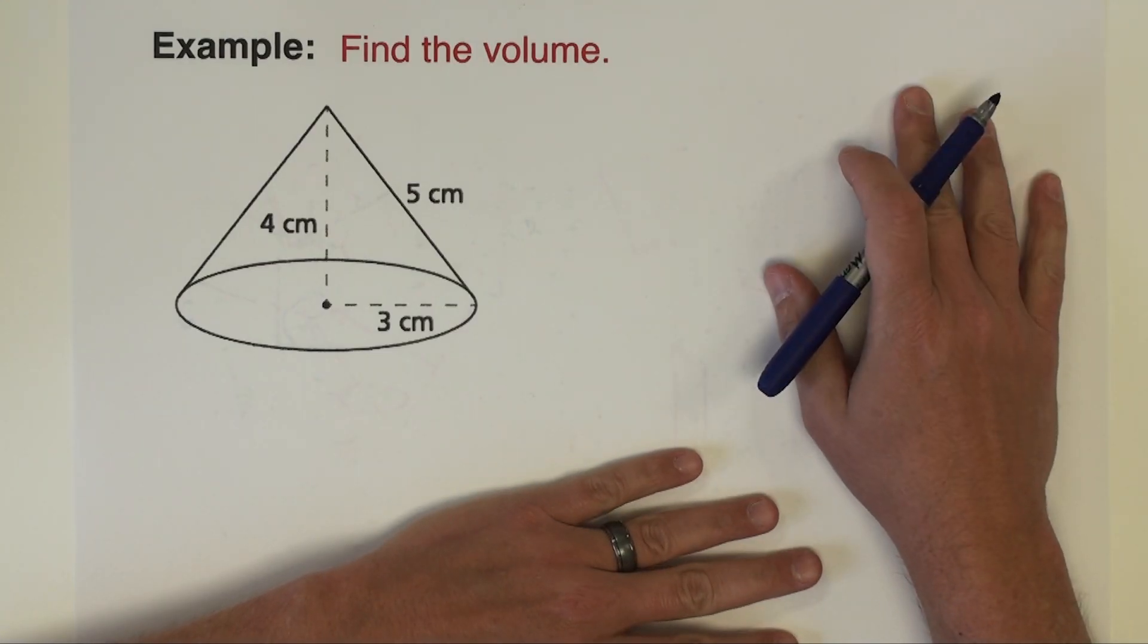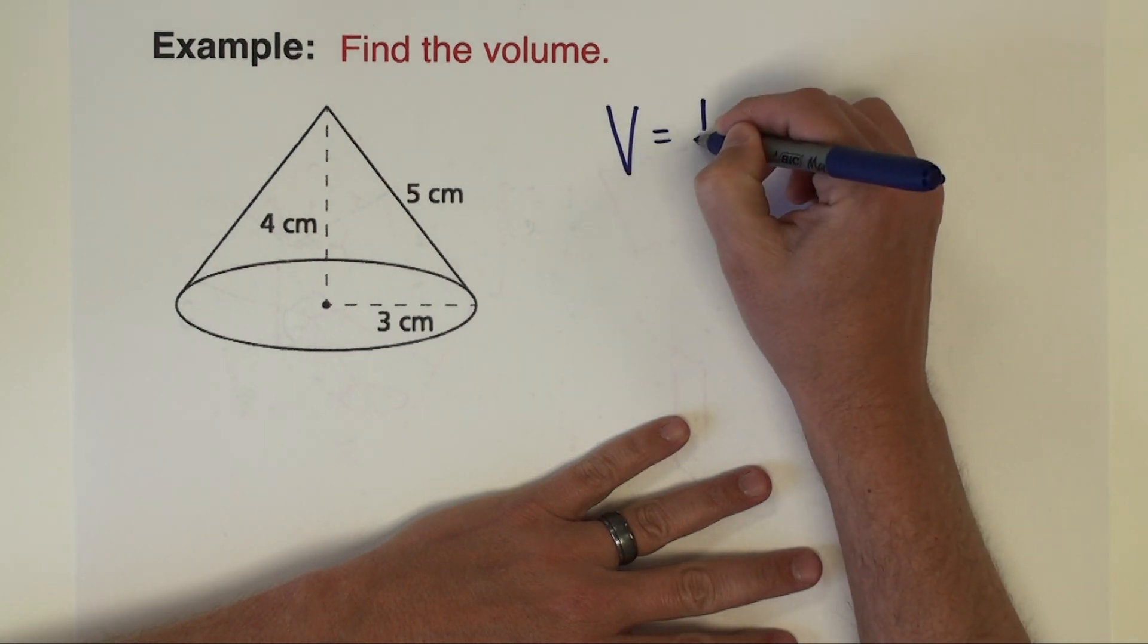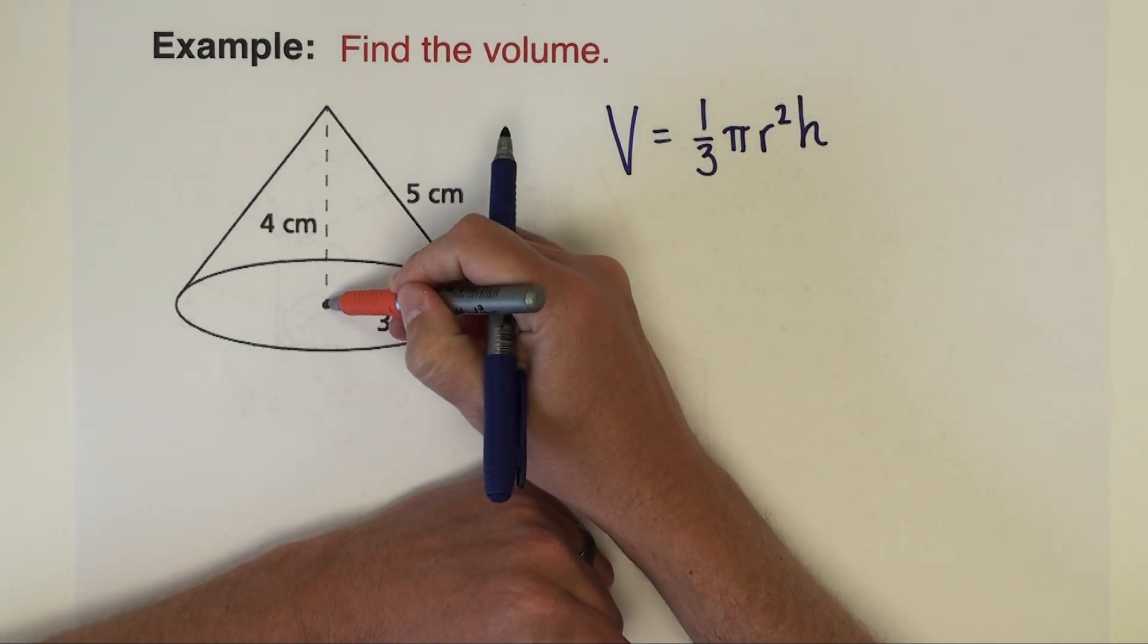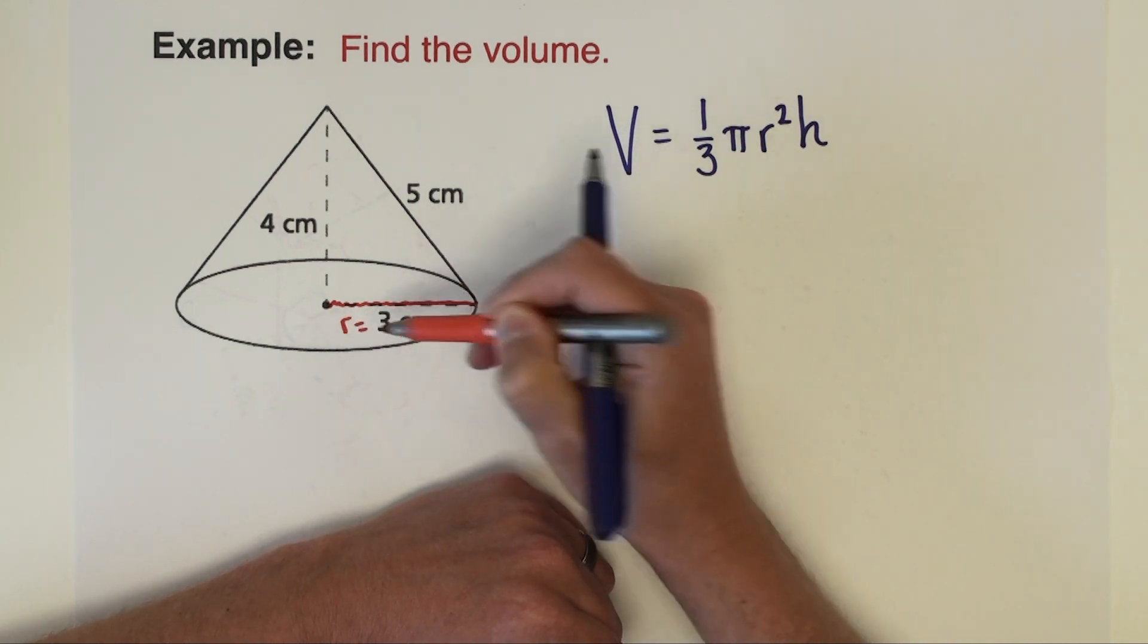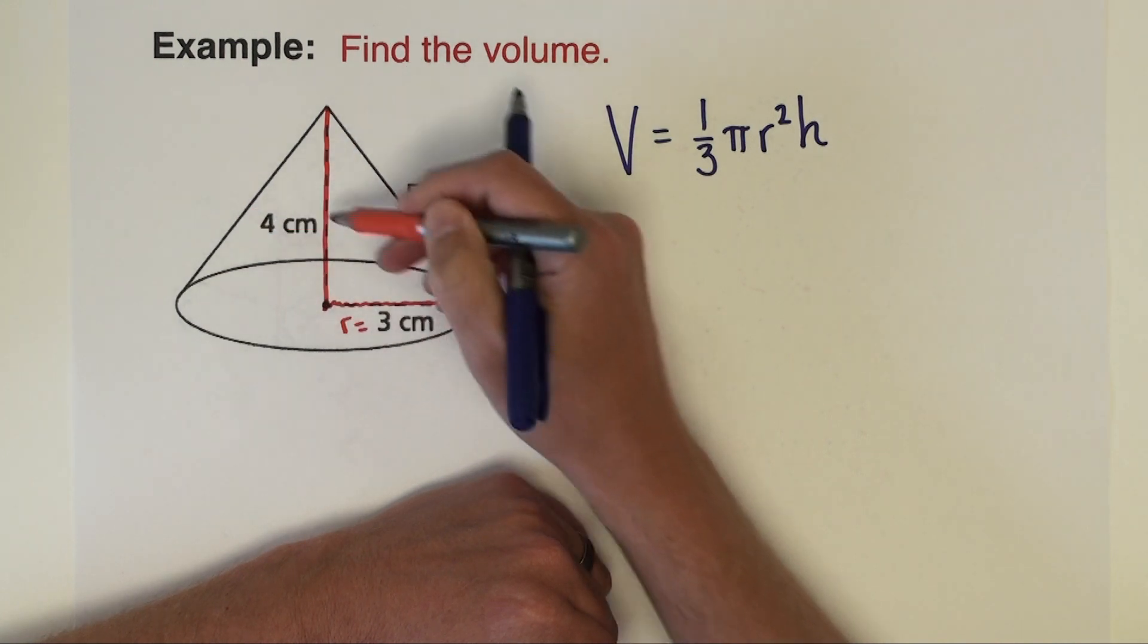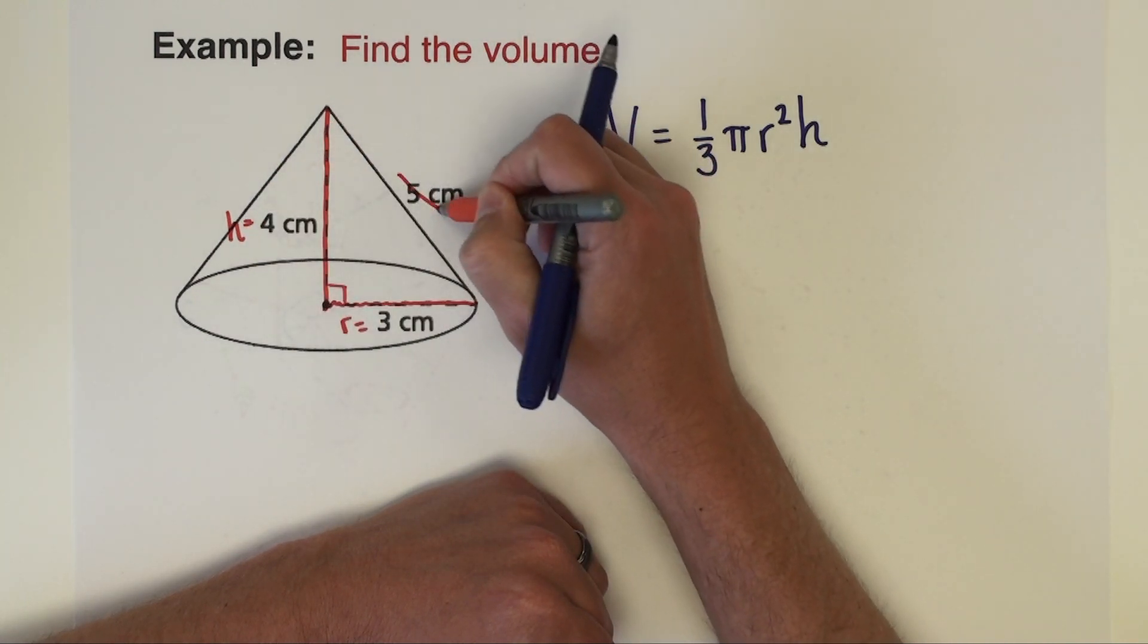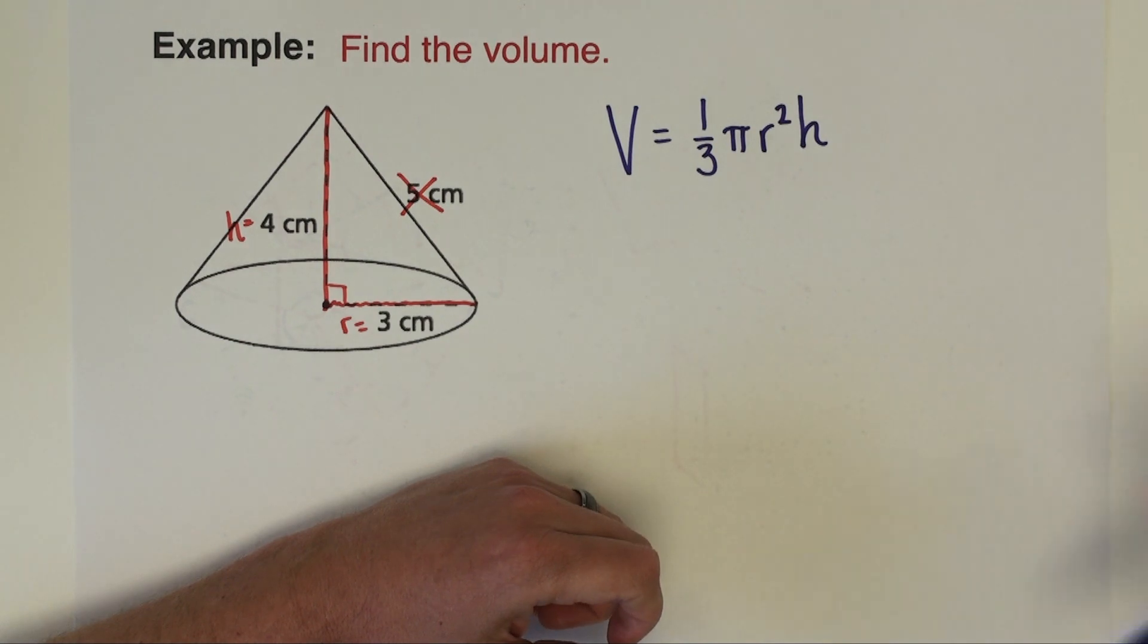First example problem, just a standard looking cone here. Volume formula is one-third pi times radius squared times height. The radius is 3. We're going to use the height, which is the straight perpendicular distance to the base. We're going to use this 4.